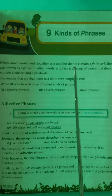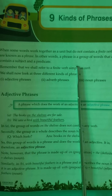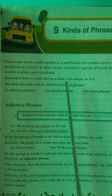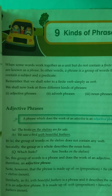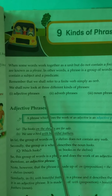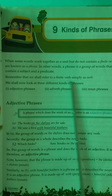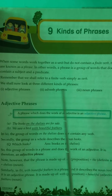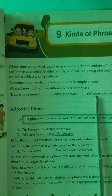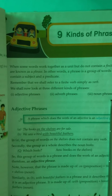Our target today is kinds of phrases. When some words work together as a unit but do not contain a finite verb, they are known as a phrase. In other words, a phrase is a group of words that does not contain a subject and a predicate. Remember that we shall refer to finite verb simply as verb. We shall now look at three different kinds of phrases: number one, adjective phrases; number two, adverb phrases; and the third one, noun phrases.